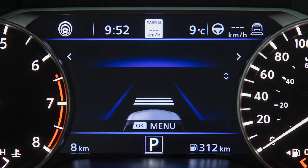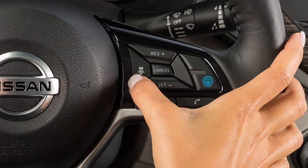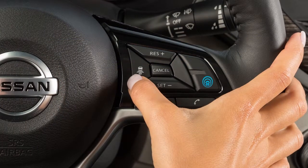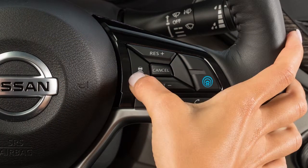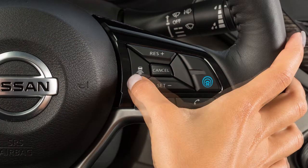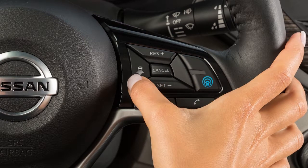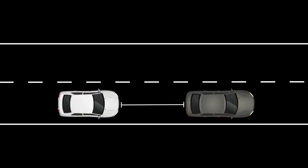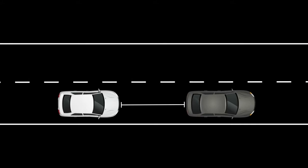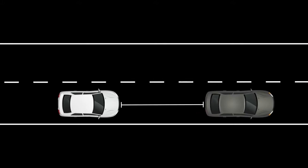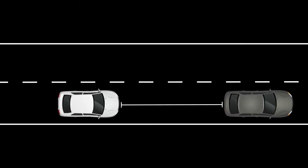There are three different distance settings that can be used: long, middle, and short. The system starts in long, and by pushing this switch, you can cycle through the other distance options. The distance to the vehicle ahead depends on speed, so the higher the speed, the further the distance.